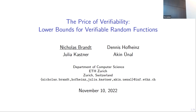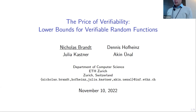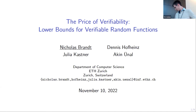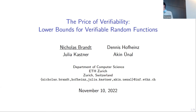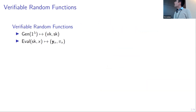The last talk of the session is 'The Price of Verifiability: Lower Bounds for Verifiable Random Functions,' work by Nicholas Brand, Dennis Hofheinz, Julia Kastner, and Akin, with Nicholas giving the talk. This talk is essentially about trying to explain why it's hard to get verifiable random functions (VRFs) with short proofs. A VRF is a public-key analog of a pseudorandom function with a generation algorithm producing a secret key, an evaluation key, and a verification key.